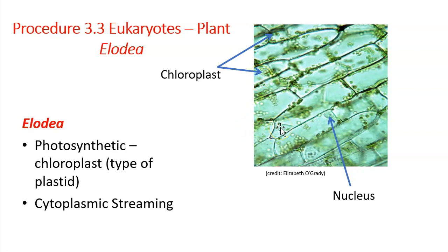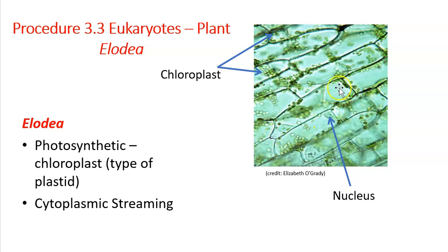If we look at Elodea when it's fresh and alive, one of the things students can observe is that the chloroplasts will seem to be moving in a circular motion right inside the cell wall. That process is called cytoplasmic streaming. Each of these cells is connected to one another through little openings called plasmodesmata. As the cytoplasm moves from one cell to the other and materials shift between cells, it causes movement of the organelles within the cell. That movement can be affected by things like light, temperature, and pH.